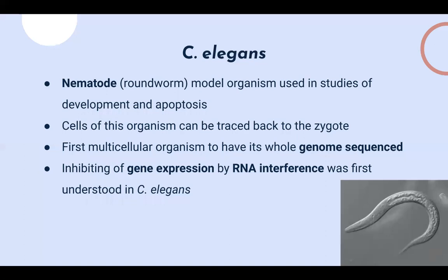Next, I'll talk about C. elegans. C. elegans is a nematode, referring to roundworms, and it's often used in development and apoptosis studies since the lineage of all its cells can be traced. All 959 somatic cells in adult C. elegans can actually be traced back to the zygote. C. elegans was also the first multicellular organism to have its entire genome sequenced and connectome mapped — a connectome being the collection of all neuronal pathways in an organism.